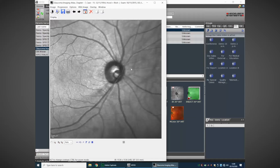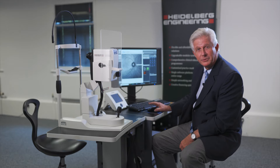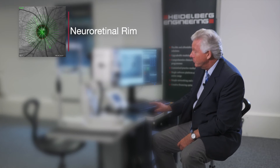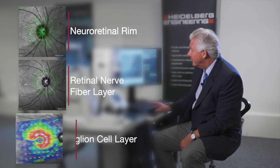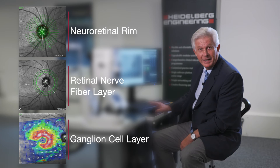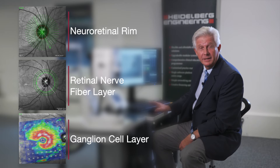We take a holistic approach to glaucoma every time: step one is the neuroretinal rim, step two is the peripapillary nerve fibre layer, and finally we follow the axons around and look at the ganglion cell layer for any notching across the horizontal midline, which is where we typically see changes relative to glaucoma.